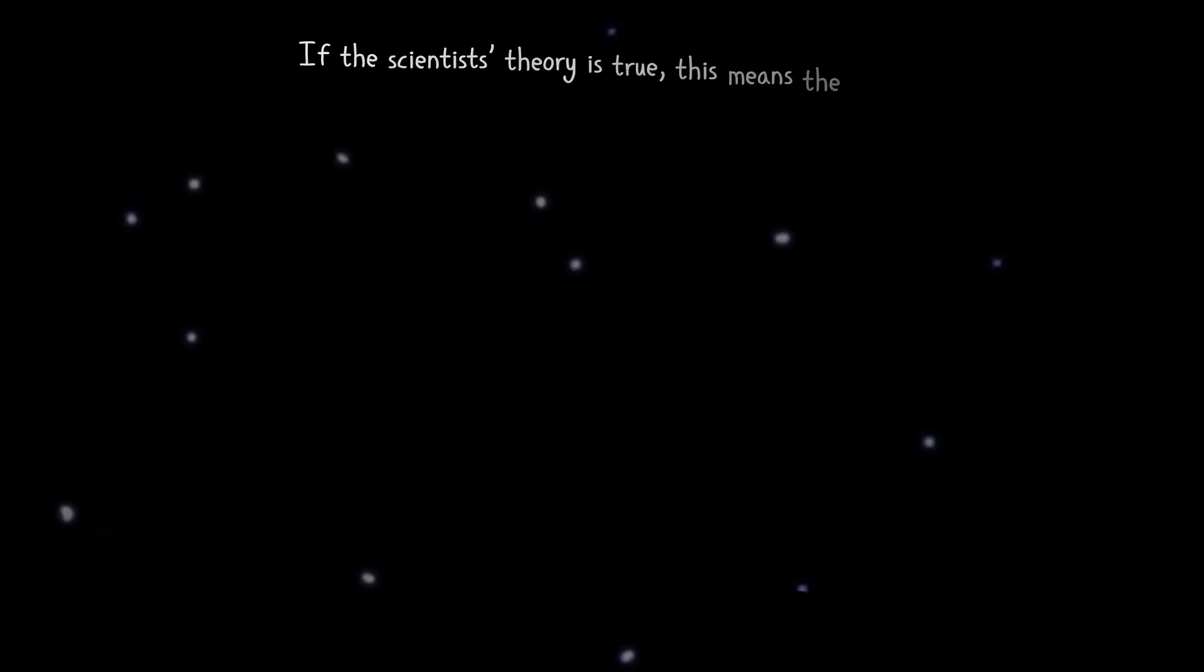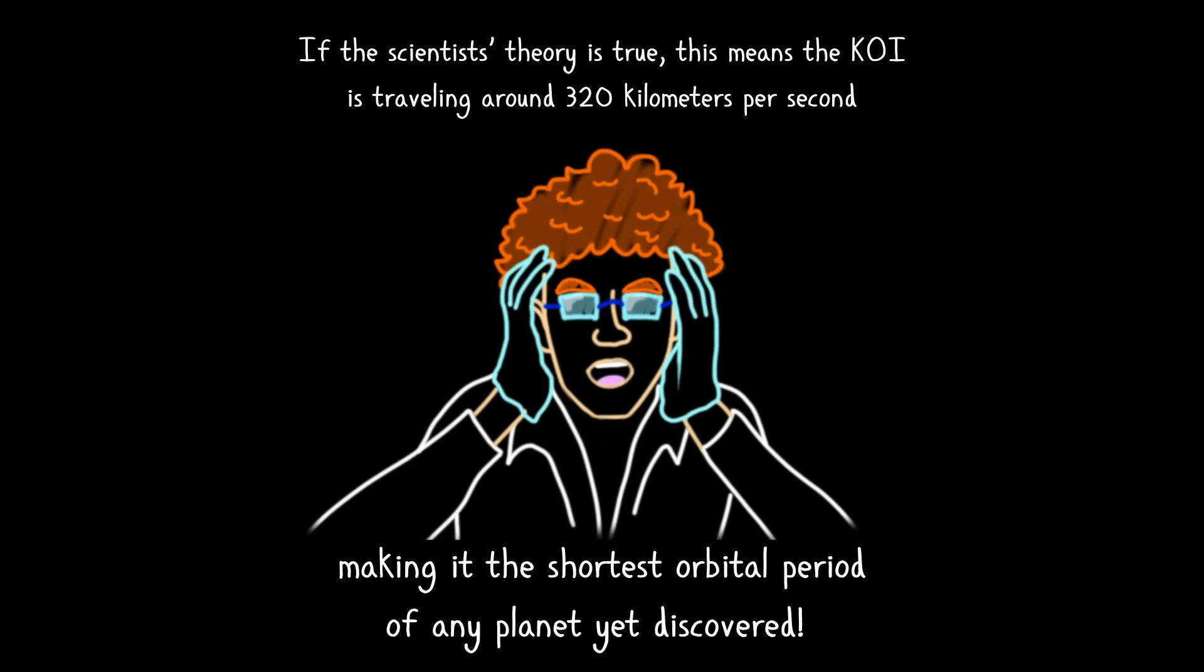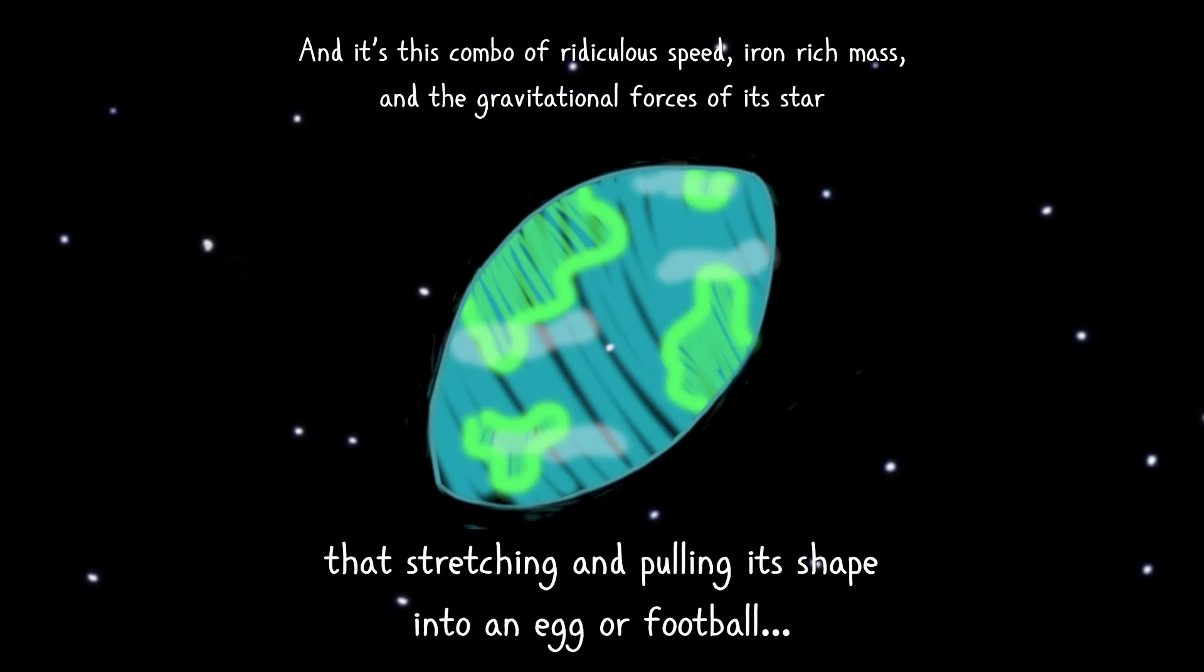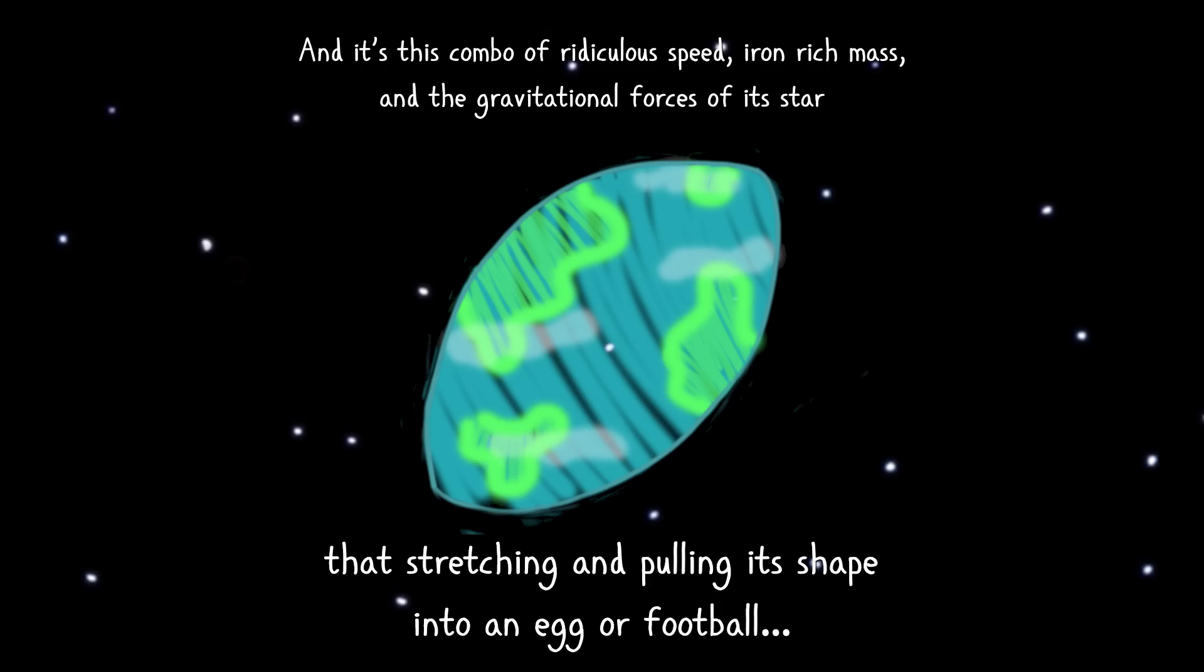If scientists' theory is true, this means that KOI is traveling around 320 kilometers per second, making it the shortest orbital period of any planet yet discovered. And it's this combo of ridiculous speed, iron-rich mass, and the gravitational forces of its star that's stretching and pooling its shape into an egg or football.